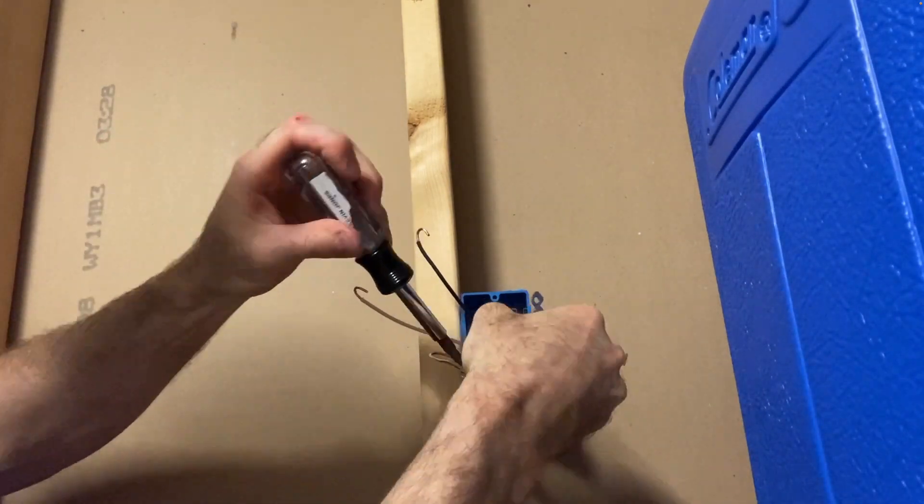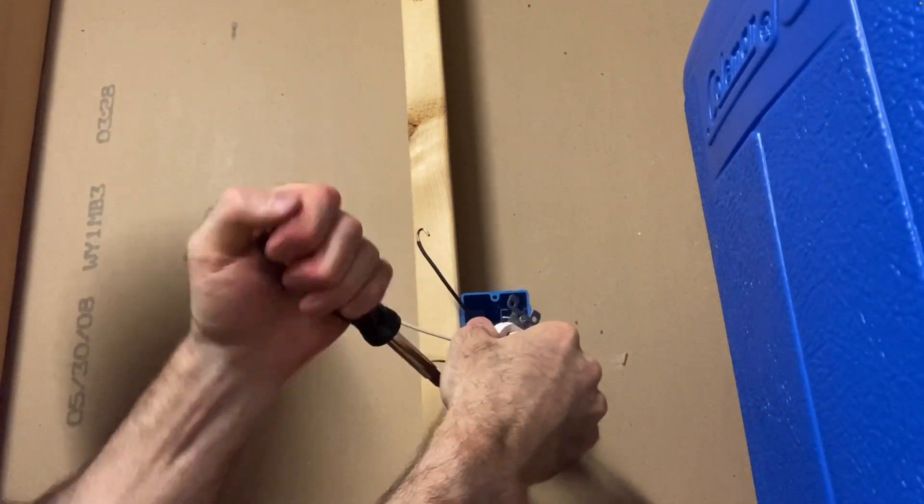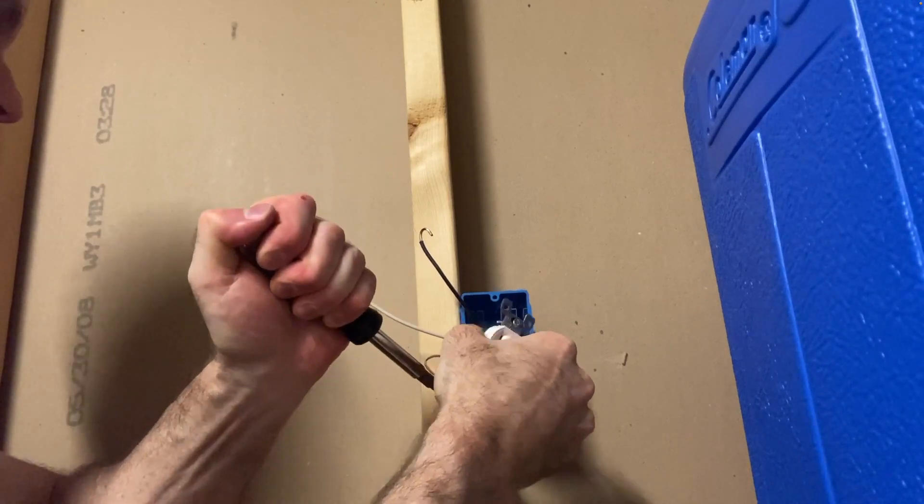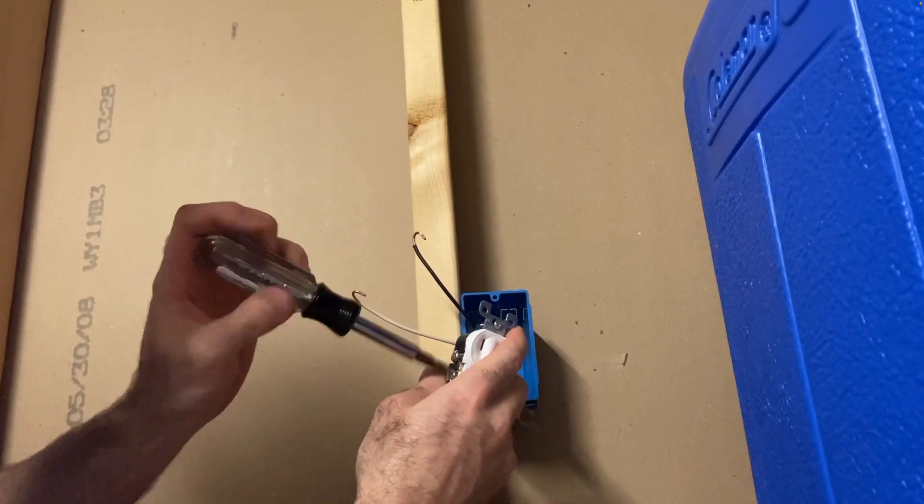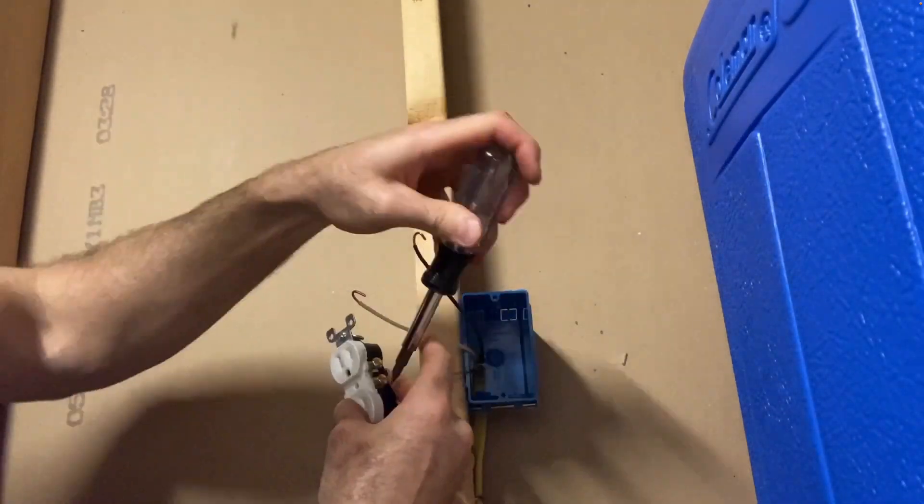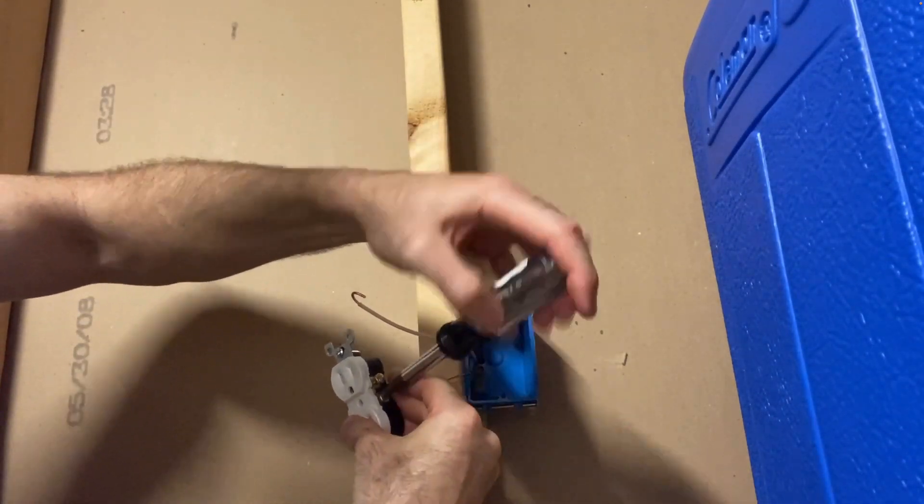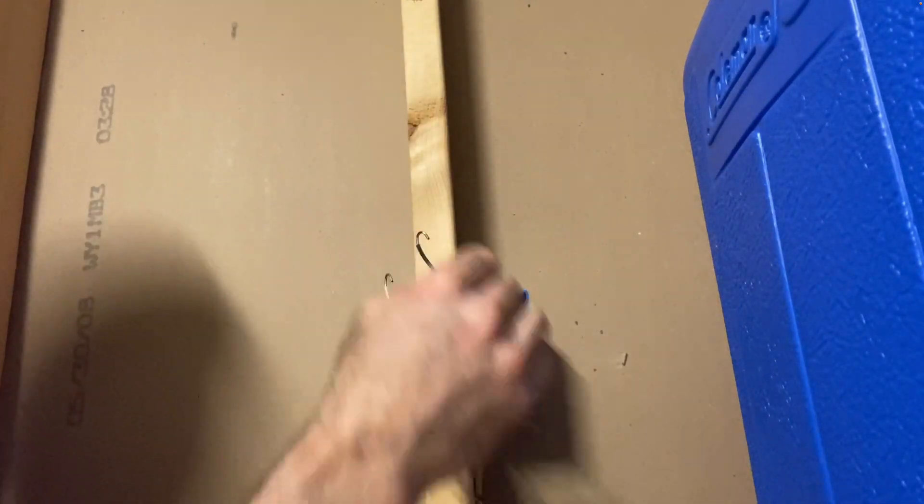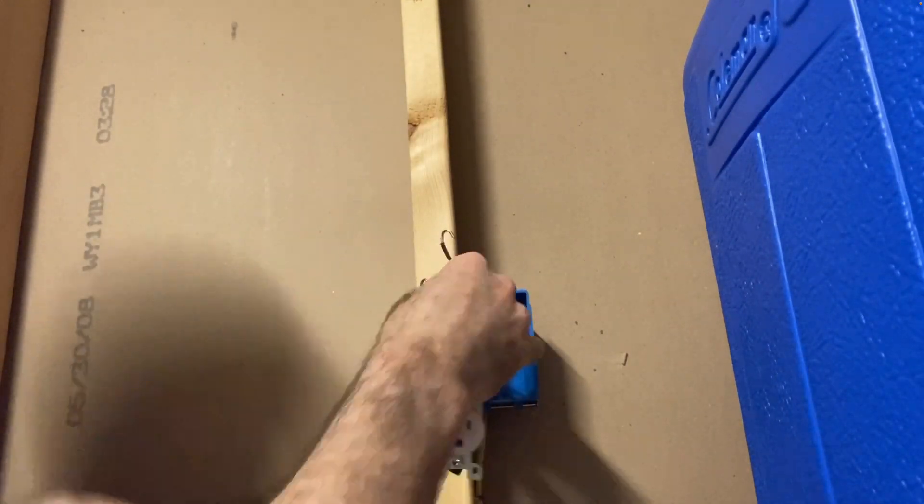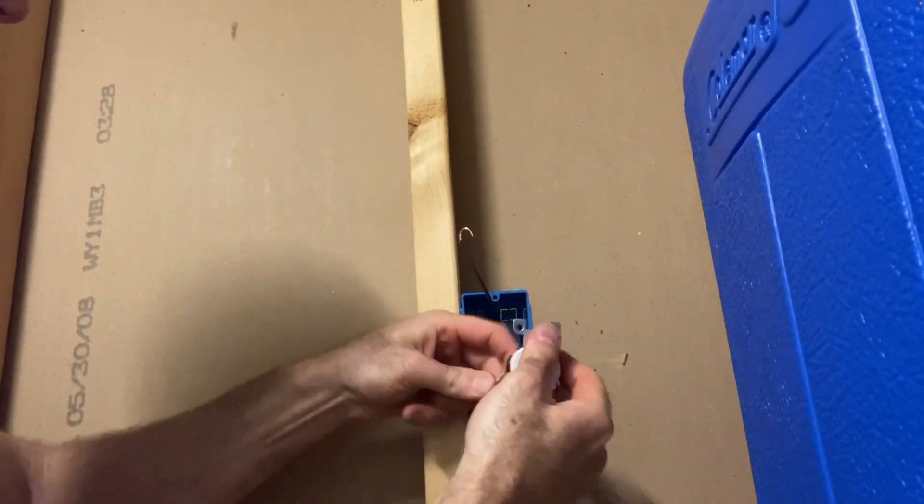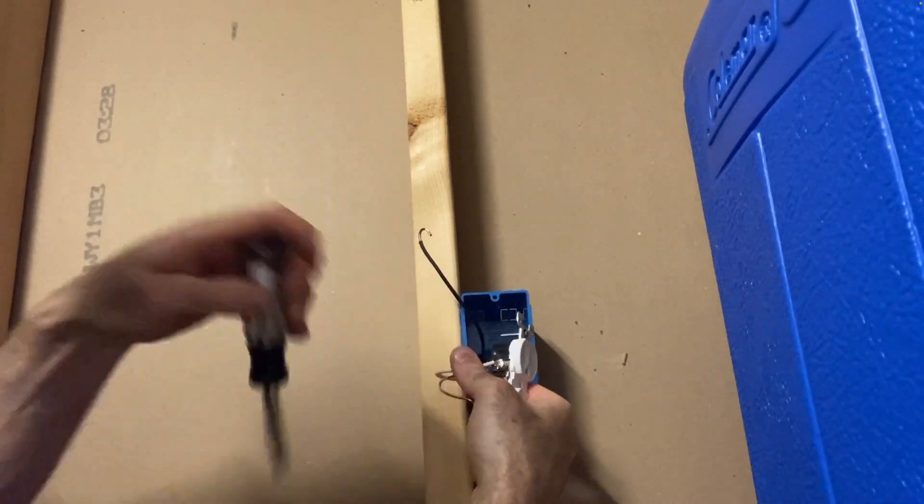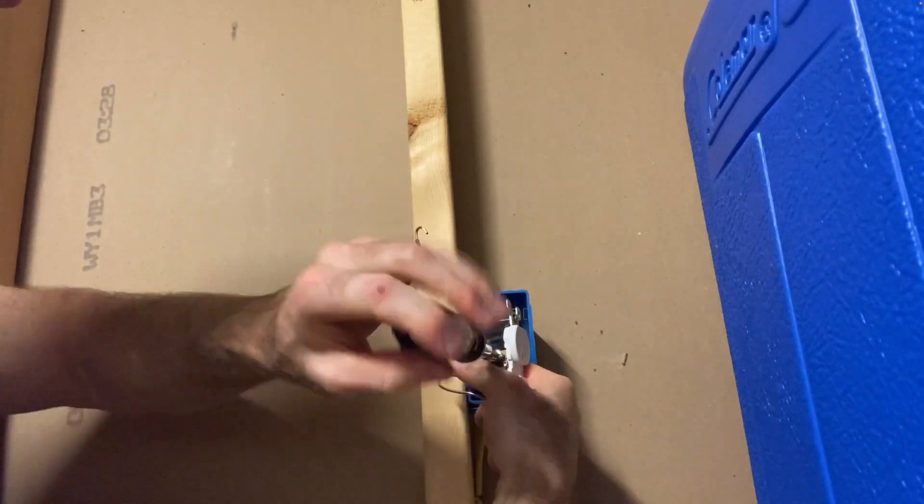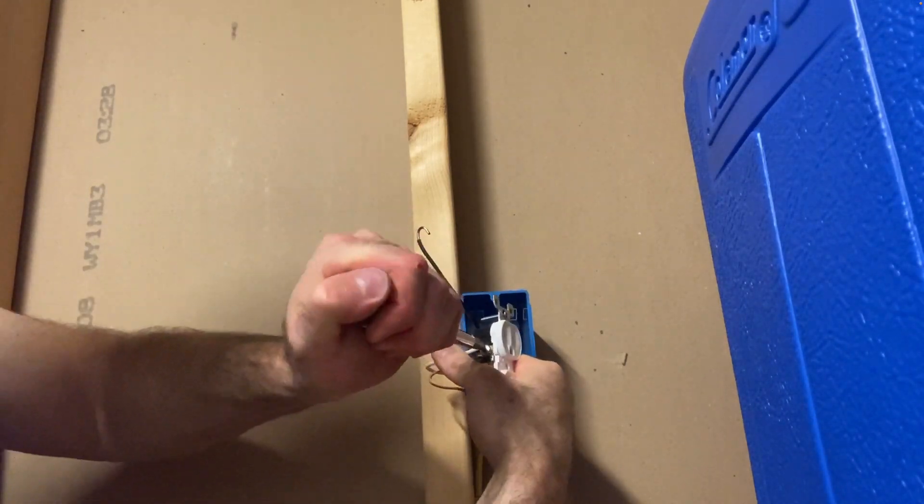I like to squeeze the wire together just to make sure it's nice and snug. Make sure your connections are tight. Again, the bright colored screws are your neutral; your brass colored screws are for your hot. Hot is a smaller slot on the outlet; the larger slot is your neutral. Make sure they're snug.